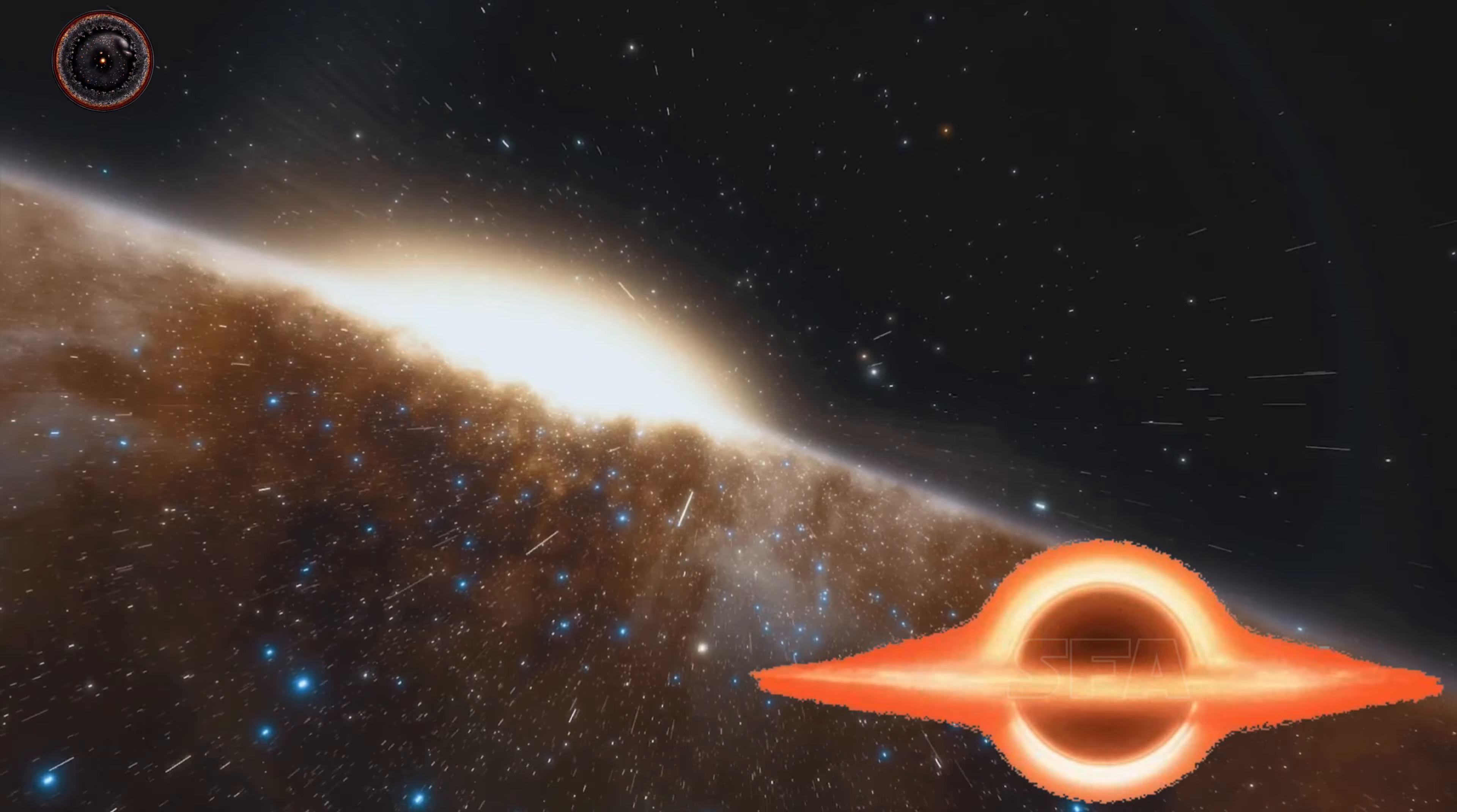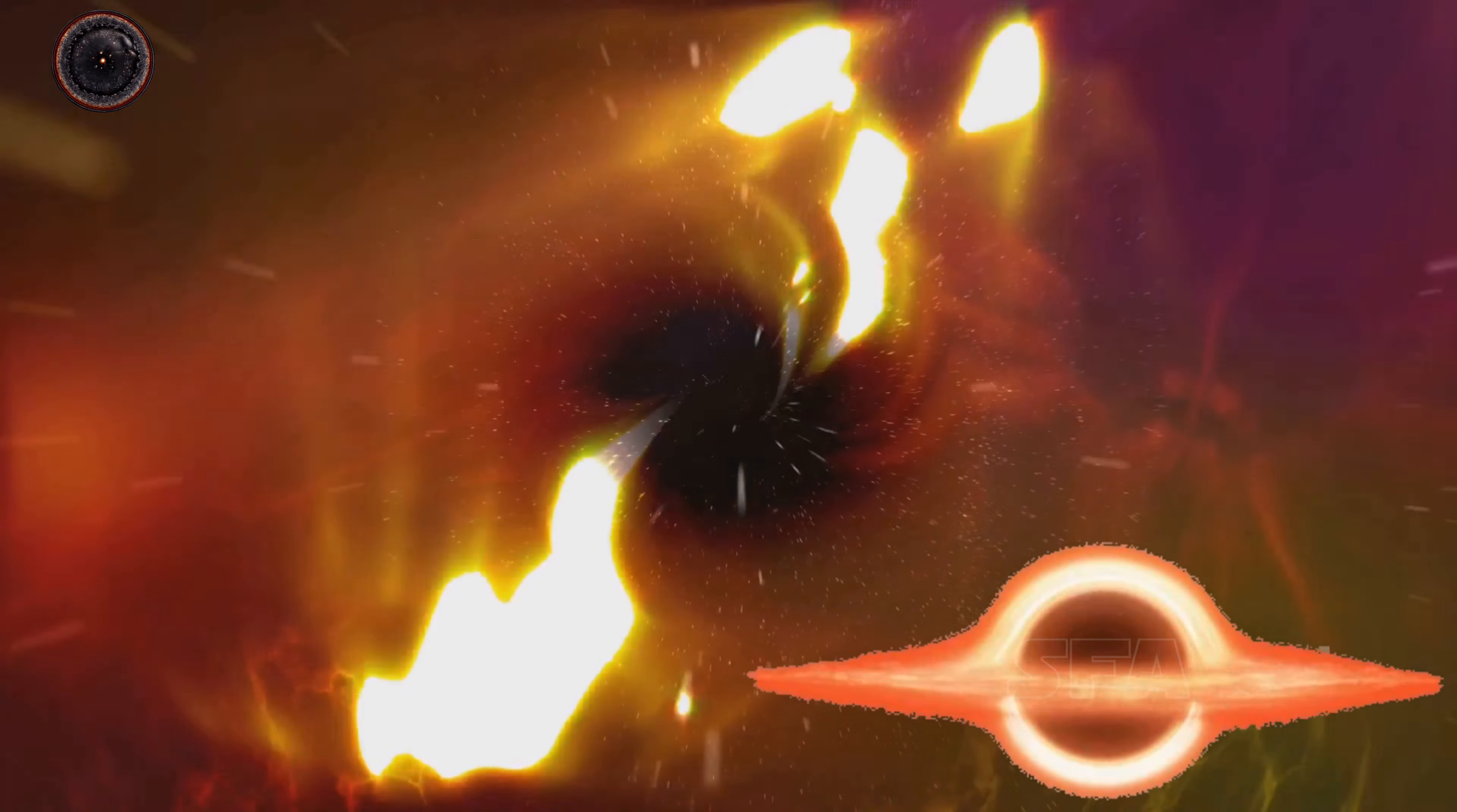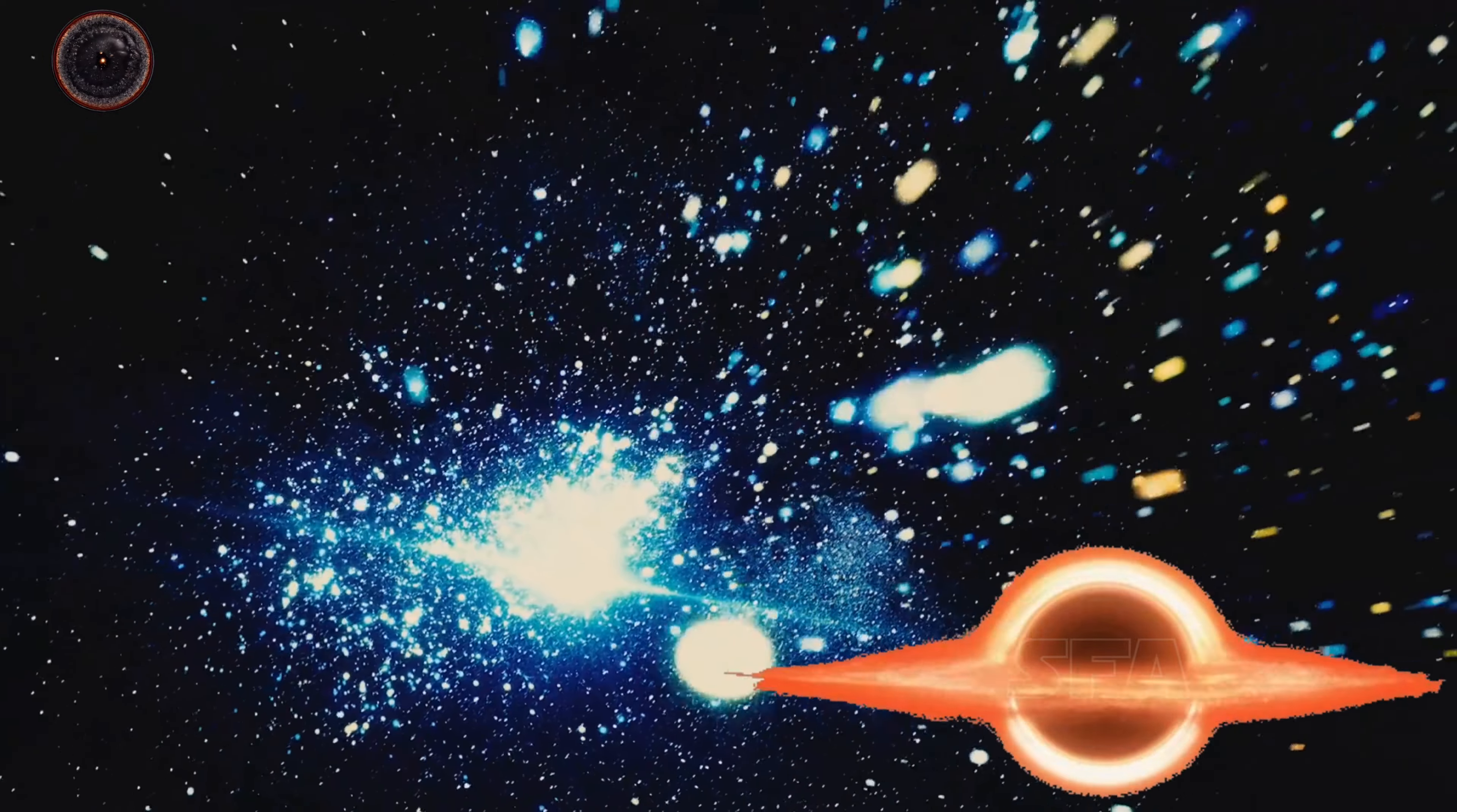But you might wonder, how does this help us determine the age of the universe? Well, if we know how fast the universe is expanding, we can play the cosmic movie in reverse. We can imagine all the galaxies rushing back toward each other, all the way back to the point where they all started from a single point. This is the Big Bang, the birth of our universe. By calculating how long it would take for all the galaxies to rush back to this starting point at their current speeds, we can estimate the age of the universe. And it turns out, based on these estimates, that our universe is approximately 13.8 billion years old.